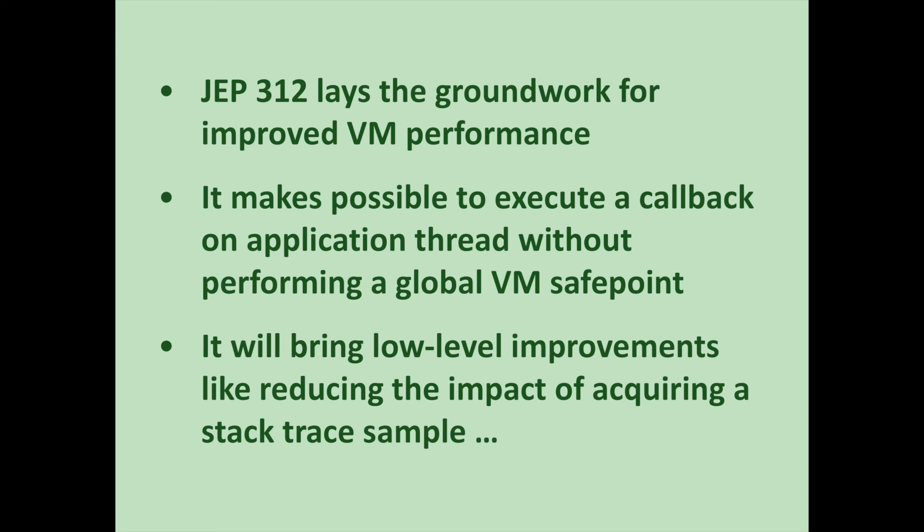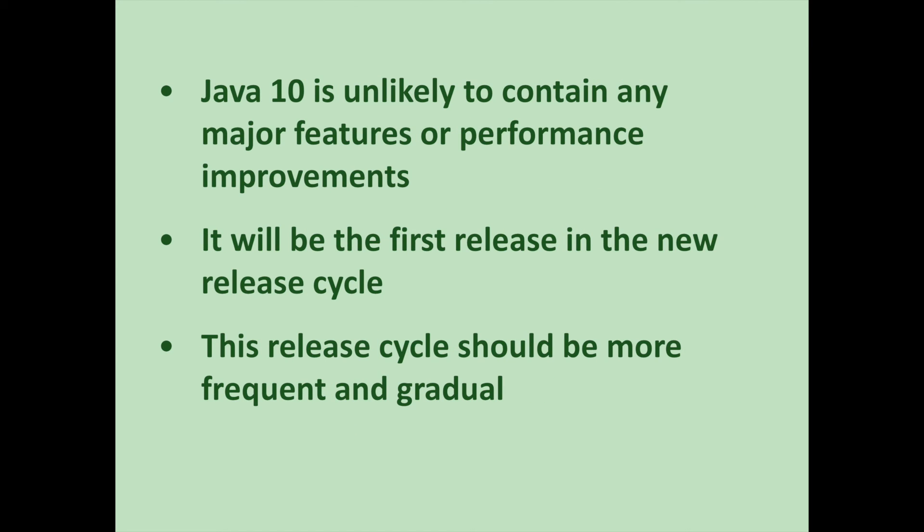JEP 312 lays the groundwork for improved virtual machine performance by making it possible to execute a callback on application threads without performing a global VM safe point. This would mean that the JVM could stop individual threads and not just all of them. Some of the small, low-level improvements this will enable include: reducing the impact of acquiring a stack trace sample for profiling; better stack trace sampling by reducing reliance on signals; improving biased locking by only stopping individual threads for revoking biases; and removing some memory barriers from the JVM.